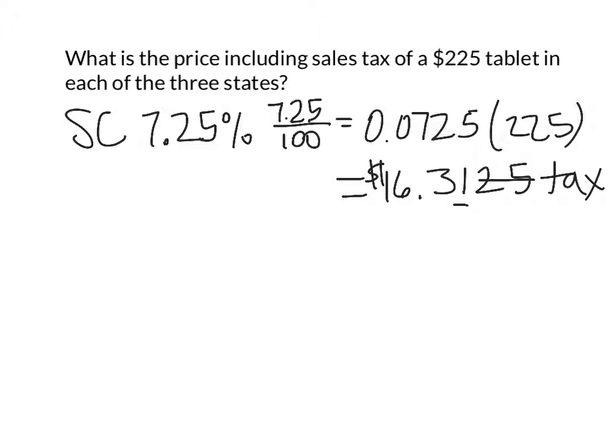So, to get the total amount, we would need to now add that to the 225. So, 225 plus 16.31 equals $241.31. Again, that's a rounded number, rounded to the nearest penny.